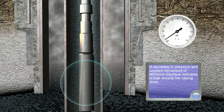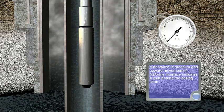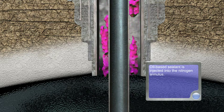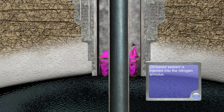A decrease in pressure and upward movement of N2-brine interface indicates a leak around the casing shoe. Oil-based sealant is injected into the nitrogen annulus.